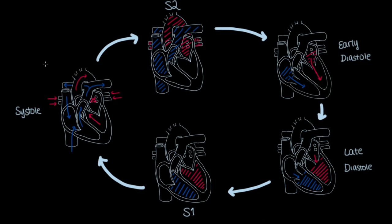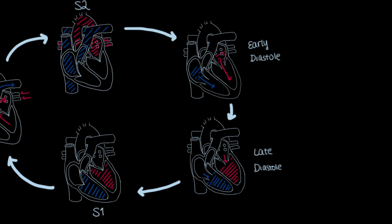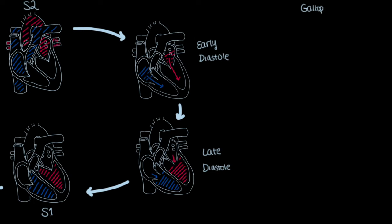Next, we'll talk about gallops, which include S3 and S4, which sound just like the sound of valves closing in S1 and S2, except they're not caused by valves and they occur at specific points during the cardiac cycle, specifically during early and late diastole.